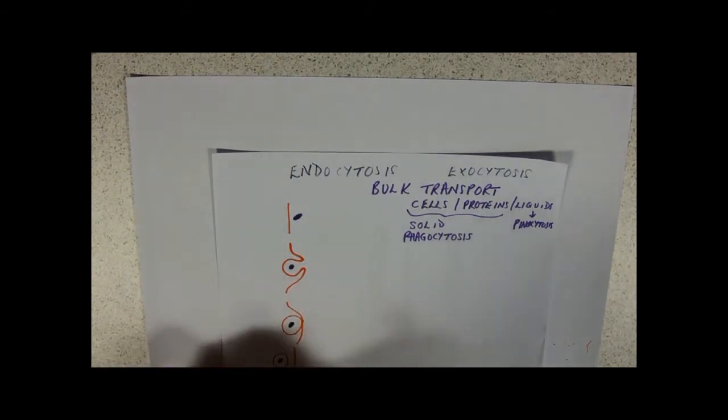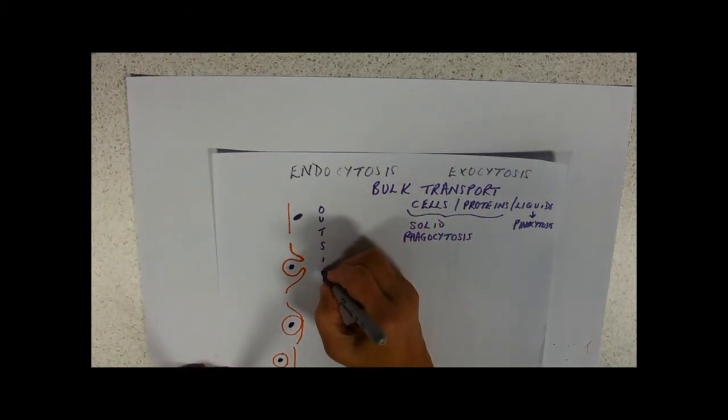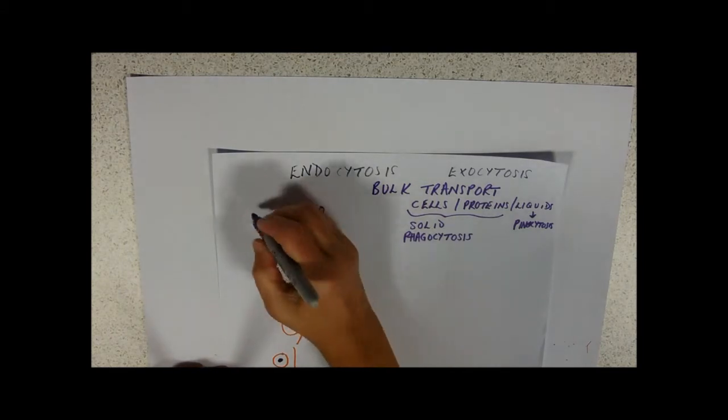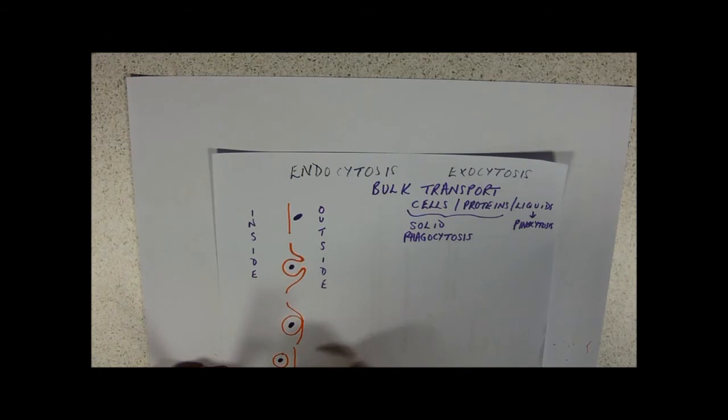If it's a food particle in an animal cell we would call it a food vacuole and a lysosome will come along and digest it. So this will be the outside and this is the inside. So now we've got our whatever it is that we're taking in inside the cell and enclosed in a vesicle just in case it's dangerous.